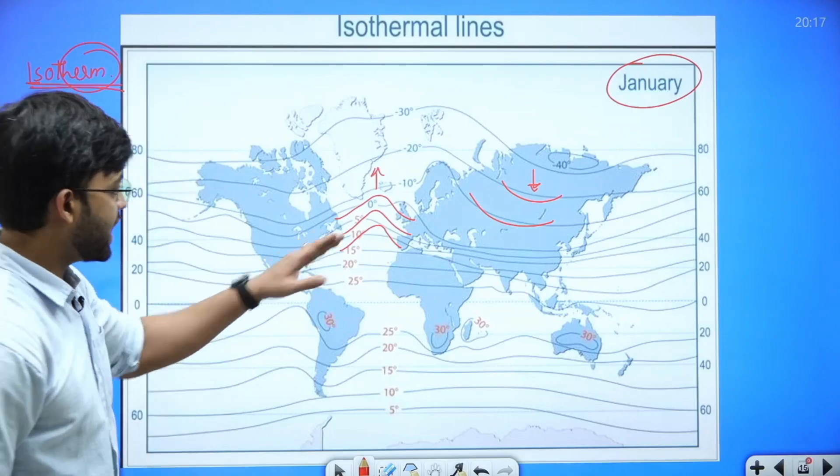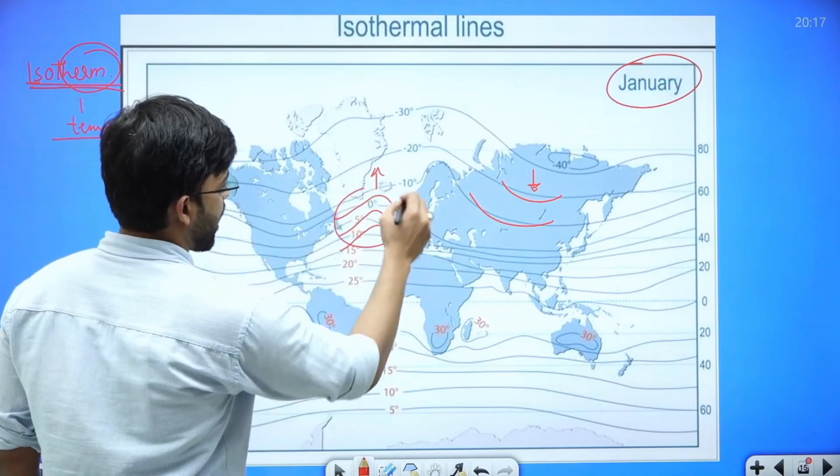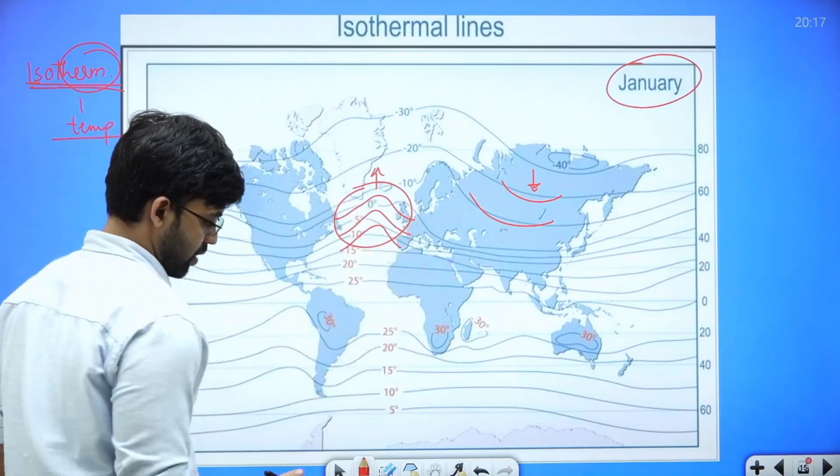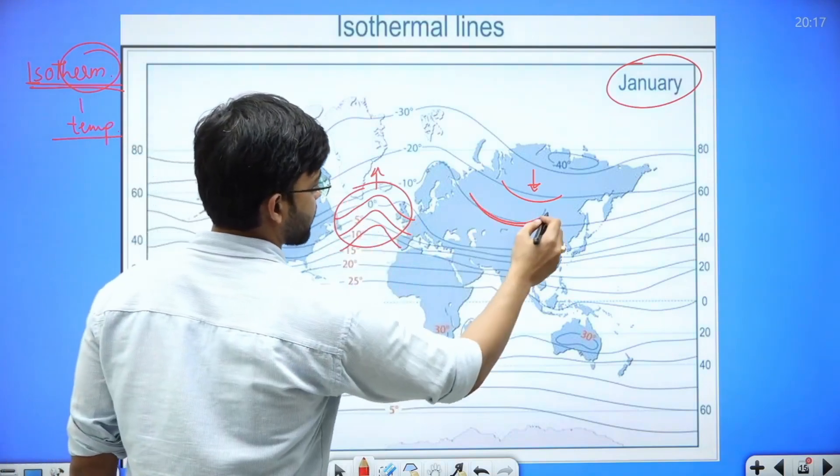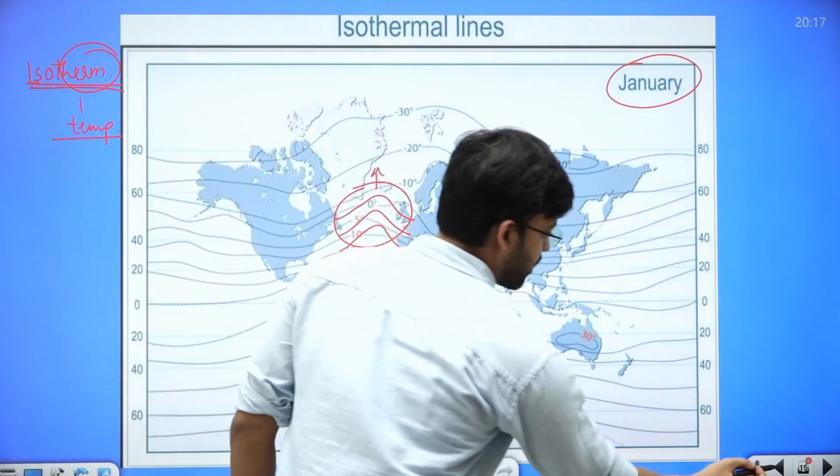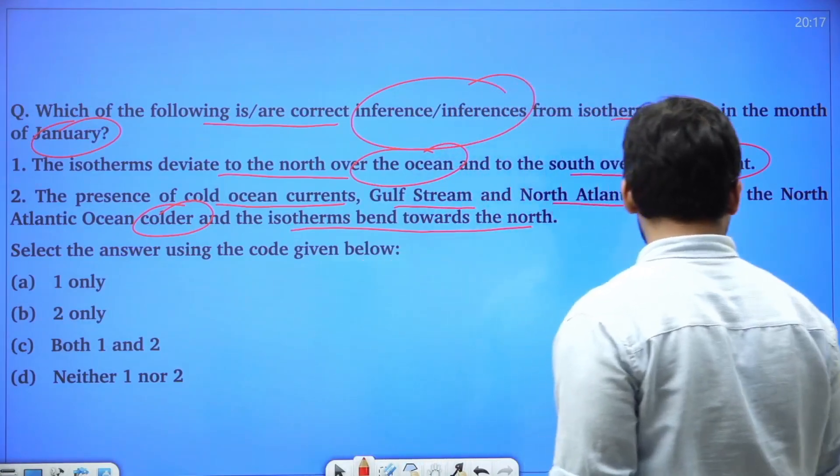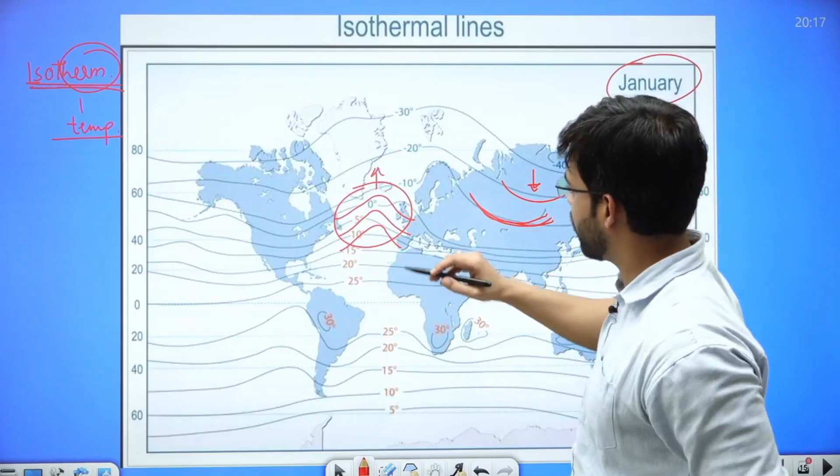If we see, the oceans are comparatively less warmer as far as the continents are concerned. Here also in the month of January, what is happening?